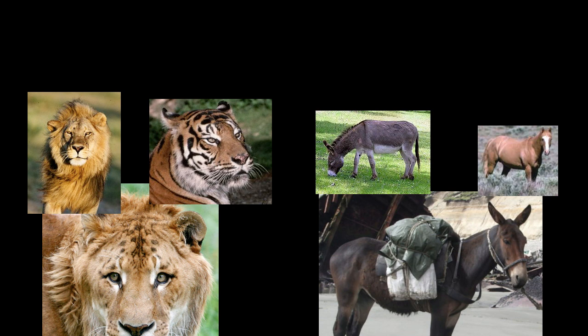We humans like to get our heads around all of the complexity around us by classifying things. There is no more obvious thing to classify than all of the living things around us. So what I want to start talking about is how do we classify all of the life around us? This is more often generally referred to as taxonomy. The most basic question you have when you look at all of the life around you — you start to see similarities between some living things, and that very most building block of how we classify all of the living things around us is putting them into buckets called species.